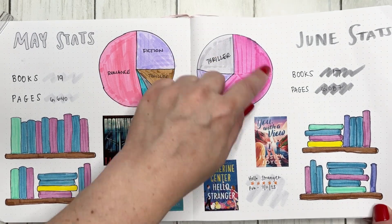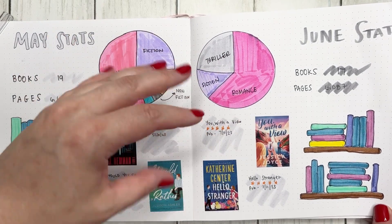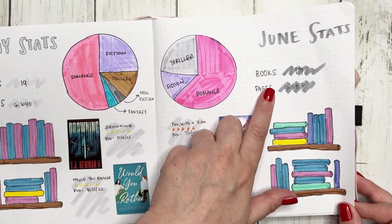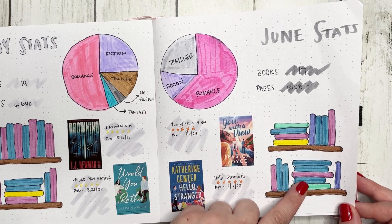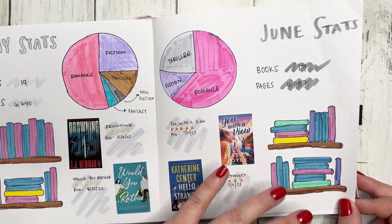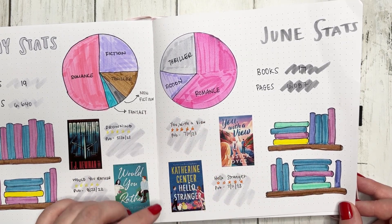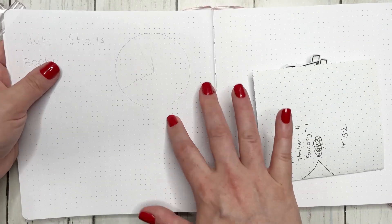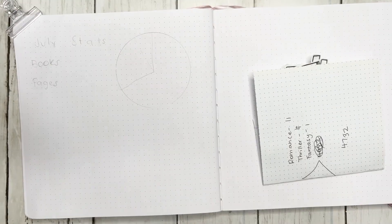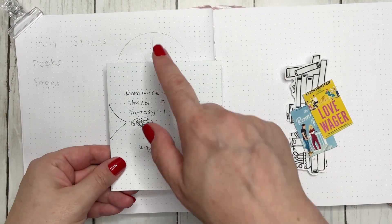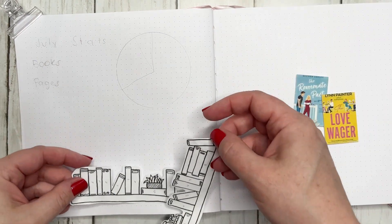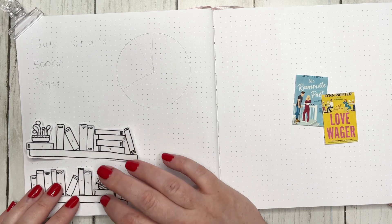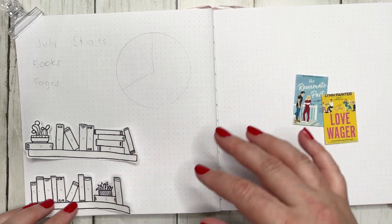I've got a tracker — this is like my genre tracker. I'm going to be writing down how many books and how many pages. I have some little bookshelves because that's where I like to put in what rating everything is. And then I always pick two books of the month that were like my absolute favorite. So I have my stats, I have my little bookshelves — these are ones that I actually drew on Procreate and then decided to print out instead of drawing in the Bujo.